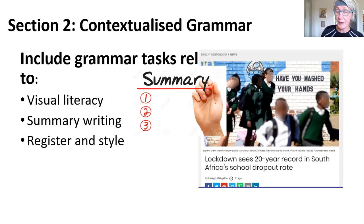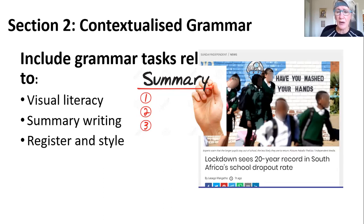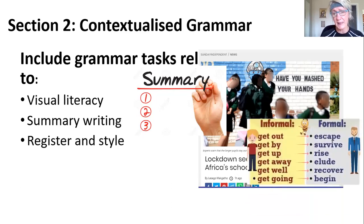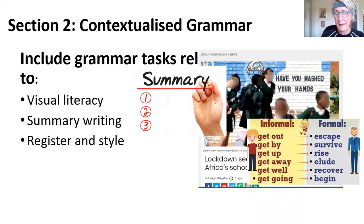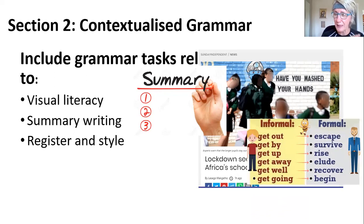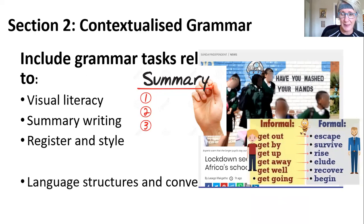You've got to look at register and tone — there must be a question on formality and informality: why has it been used? Not just 'is it formal or informal,' but you must say why did they use contractions, why did they use 'get going' instead of 'begin' or 'commence'? You can ask them to identify informality, but then they must comment on its use in the text.